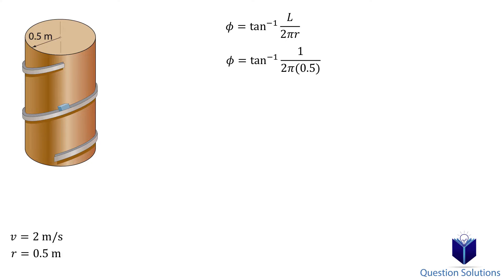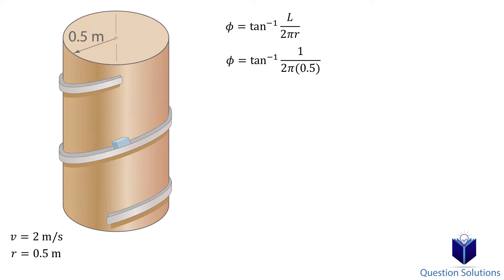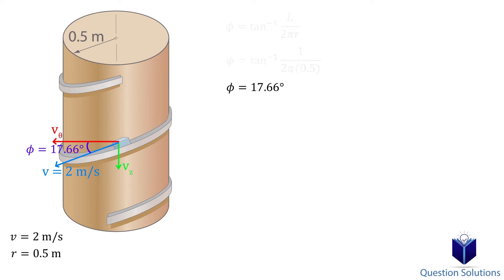To show what angle this gives us, I will draw the components of velocity for the box. The inclination angle is the angle between the transverse component of velocity and the magnitude of velocity. Let's plug in the values we know and solve — this gives us the angle between the transverse component of velocity and the magnitude of velocity.